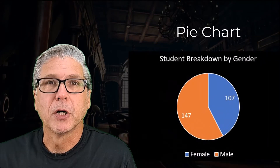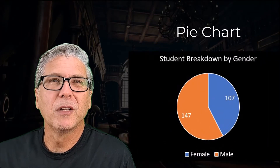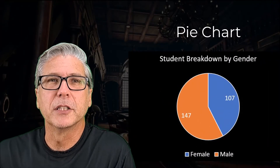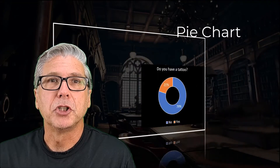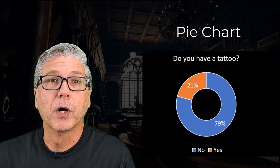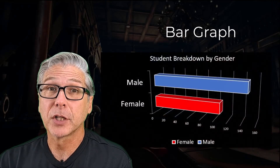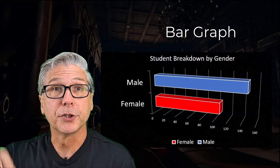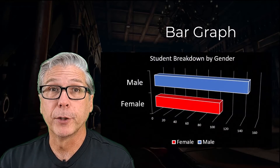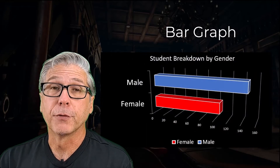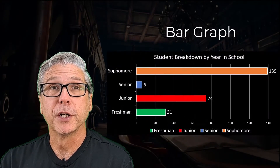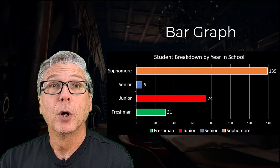Pie charts come in a variety of styles but all convey basically the same information. I am just showing you a few of the many options available. Bar graphs are the other common graph for qualitative data. Instead of slices, they use bars to represent how frequently or infrequently the different levels of the qualitative variable are observed.